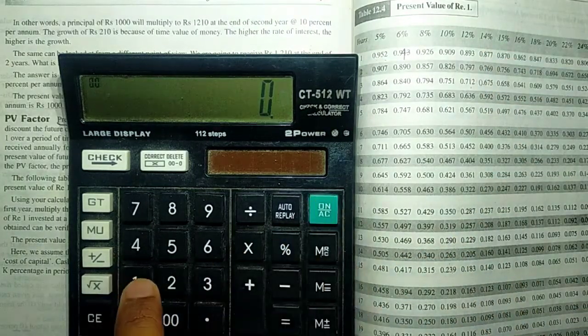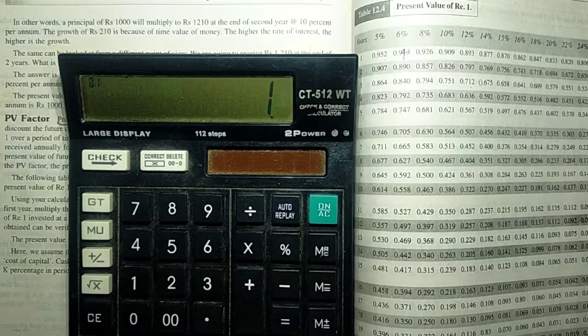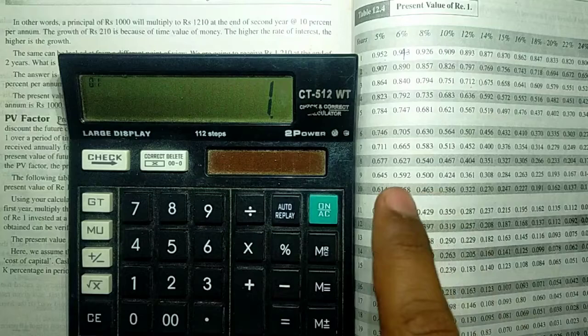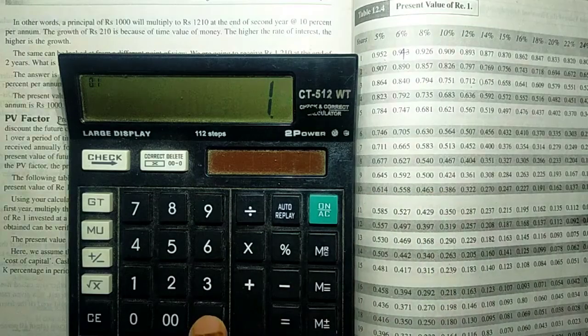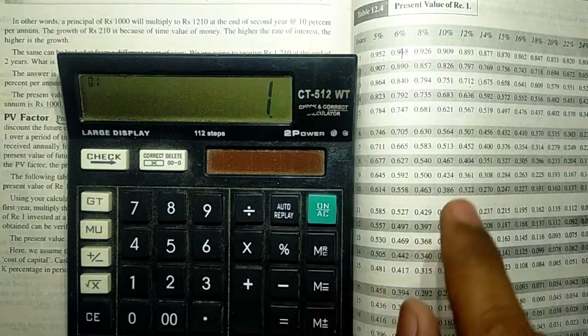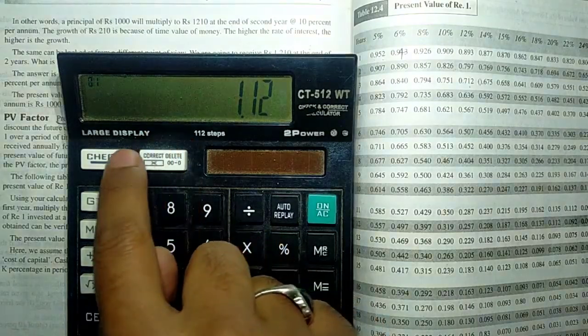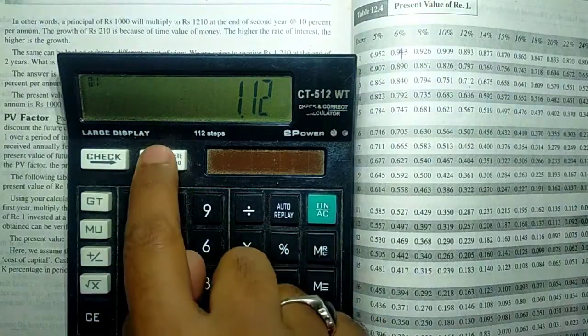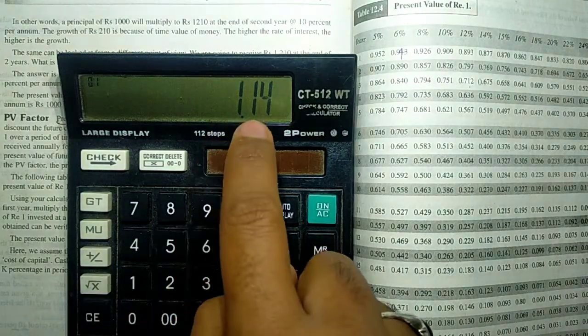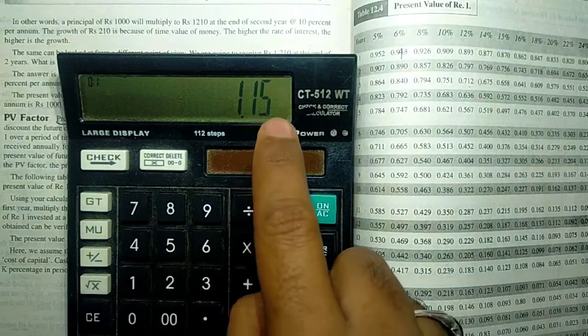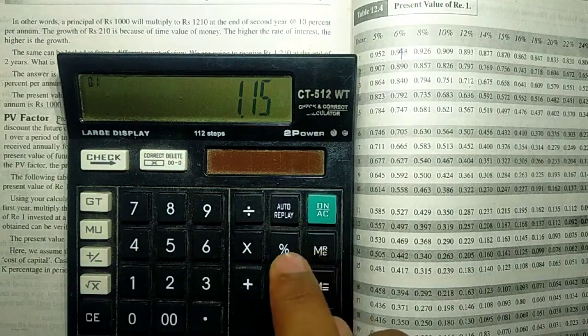What you need to do is type 1, then a decimal point. Whatever the percentage is, we'll be writing it afterwards. If it's 12%, you write 1.12. If it's 14%, you write 1.14. If it's 15%, you write 1.15.